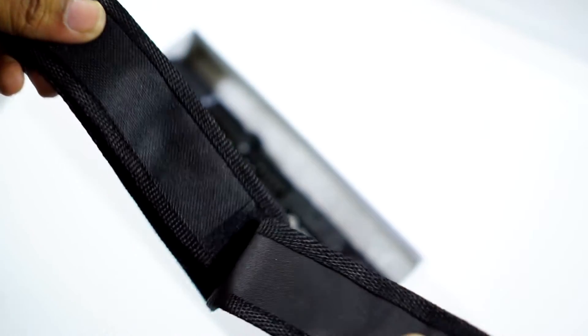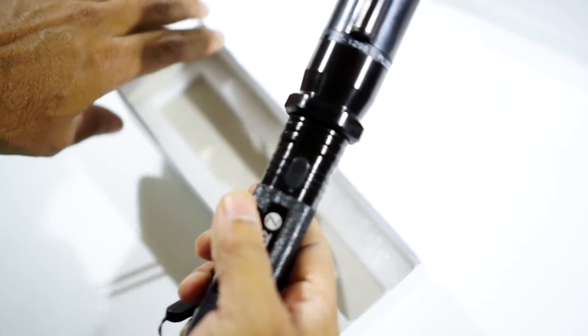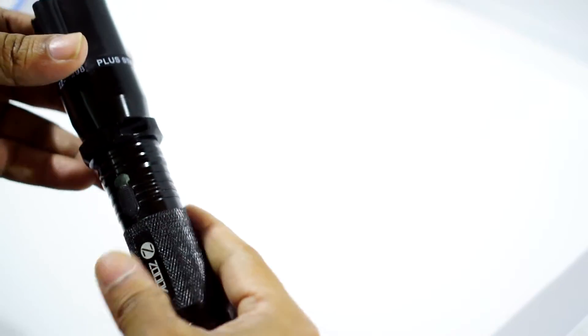Apart from this, we get the Zoox stun baton in the box. This one is looking solid in my hand. It's a mixture of metal and high-quality plastic.